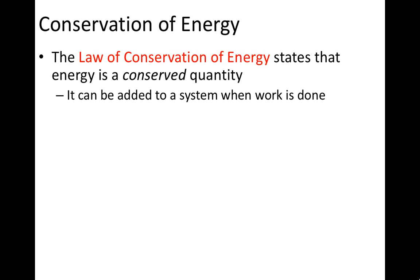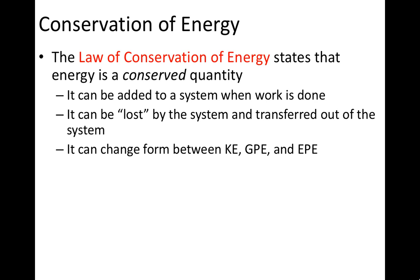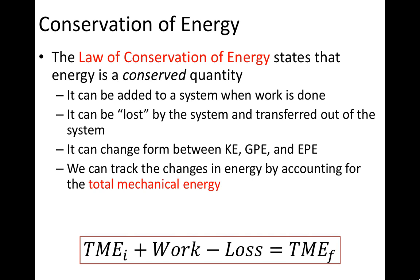We can add energy to our system if work is done on the system. The system can lose energy if a non-conservative force like friction or drag removes energy. Energy within the system can change form between kinetic and potential — potential energies can trade back and forth. But if we look at all the energy changes, we can account for the total mechanical energy. Initial total mechanical energy plus work added, minus loss removed, gives the change in total mechanical energy. So what you start with plus the amount it changes is what you end with. Conservation of energy is all about tracking the energy in and out of a system.